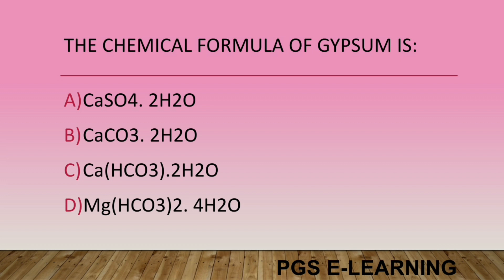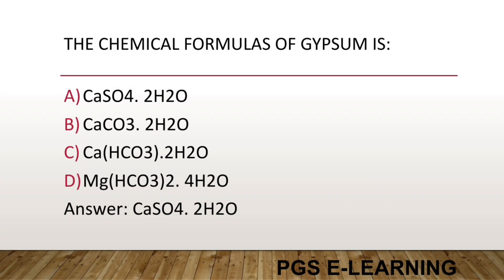The chemical formula of gypsum is: Option A, CaSO4·2H2O. Option B, CaCO3·2H2O. Option C, CaCO3·2H2O. Option D, MgHCO3·4H2O. Correct answer is CaSO4·2H2O.